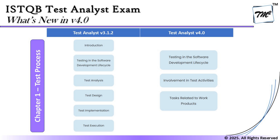Here we will be more talking about the software development lifecycle and how testing gets organized in that. The four things we see in 3.1 — test analysis, test design, implementation, and execution — are still there as part of the second topic of 4.0, that is involvement in the test activities. It's just being called as a major topic, whereas the last one is task related to work products, which is what kind of documentation do we create. The topics which were separately there are now being put into a major topic, and work products are also being discussed as part of it.